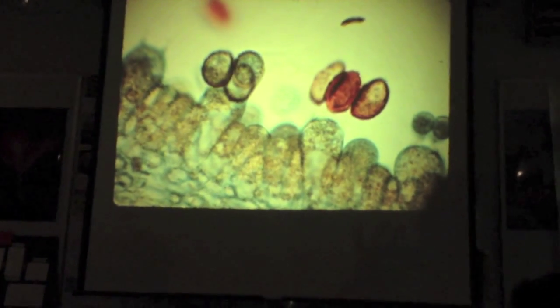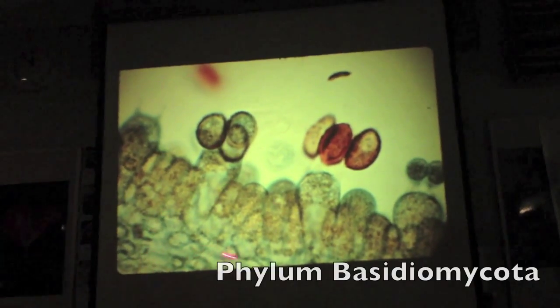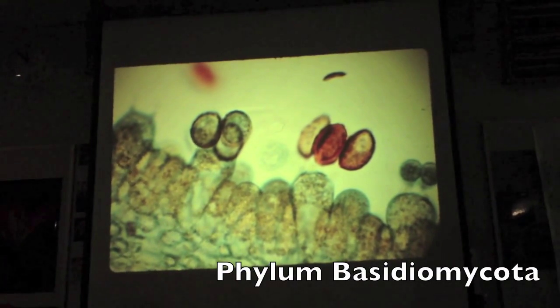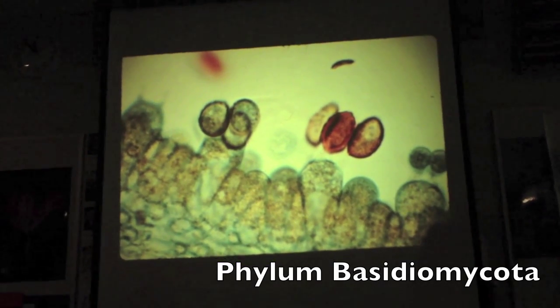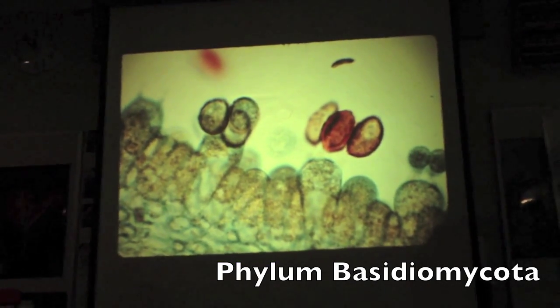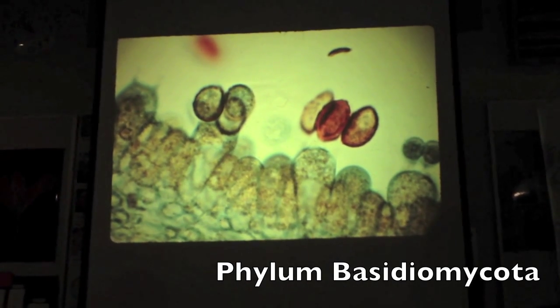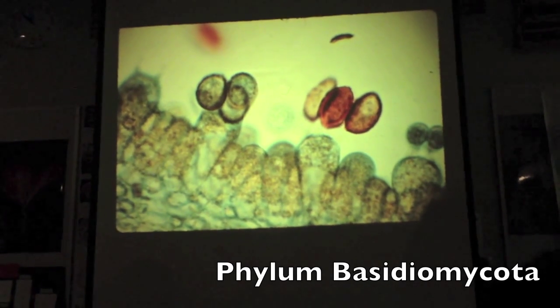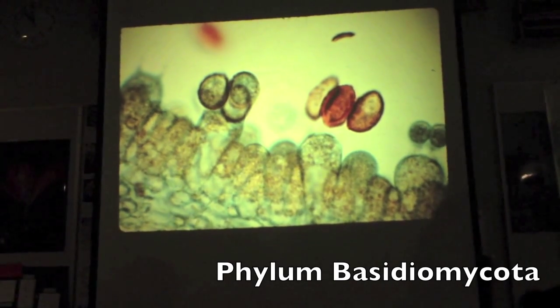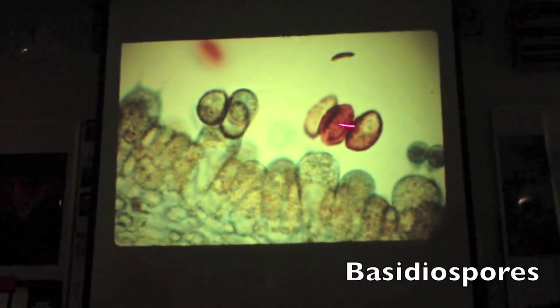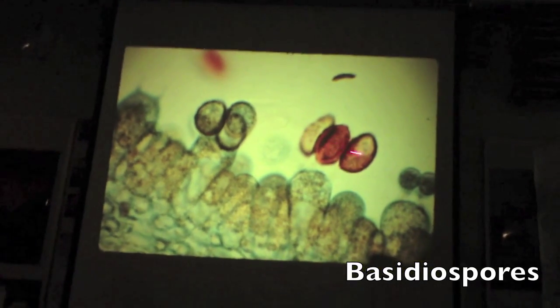What do you think we're looking at here? Spores. We've definitely got spores. But the spores of what? That's the gill of a mushroom. So what phylum are we in? Basidiomycota. So then the rest follows — these spores are called basidiospores.